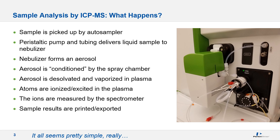Let's review what happens in a typical sample analysis by ICP-MS. First, the sample is picked up by your autosampler. The peristaltic pump and tubing deliver the liquid sample to the nebulizer. The nebulizer forms an aerosol, which is conditioned by the spray chamber. That conditioned aerosol is then desolvated and vaporized in the plasma, where atoms are ionized and excited, and ultimately measured by the spectrometer. Finally, your sample results are printed or exported. It all seems pretty simple, really.